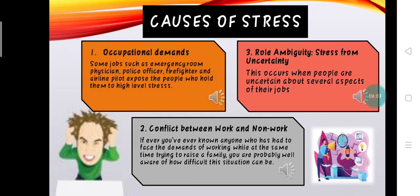The third cause of stress is role ambiguity — stress from uncertainty. This occurs when people are uncertain about several aspects of their jobs. Even if individuals are able to avoid the stress associated with role conflict, they may still encounter an even more common source of job-related stress called role ambiguity. Examples include uncertainty about the scope of their responsibilities, what is expected of them, and how to divide their time between various duties. Most people dislike such uncertainty and find it quite stressful, but it is difficult to avoid.